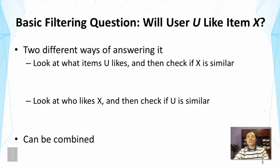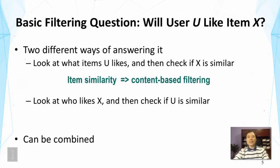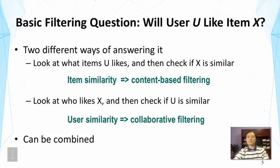The basic filtering question is: will this user like this item? There are two ways to answer this. First, look at what items the user already likes and see if item X is similar to those items. Second, look at who else likes item X and see if this user resembles those users. The first strategy leads to content-based filtering; the second exploits user similarity and is called collaborative filtering.